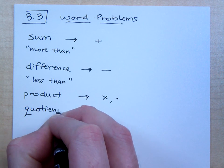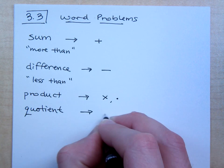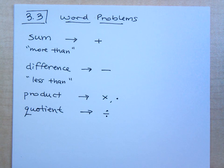And when we see the word quotient, that's going to indicate what? It means division. It's the last thing we have there is division.